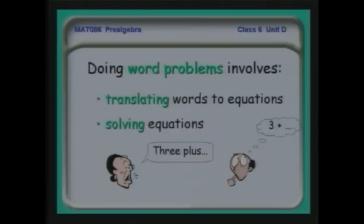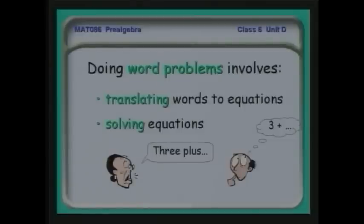Once you have that equation, no matter how complicated it is, you're at the easy part — because once you have an equation, as long as you follow the steps and follow the rules, you'll know that you're going to come out with an answer. The hard part is to take the words and translate those into the equations.